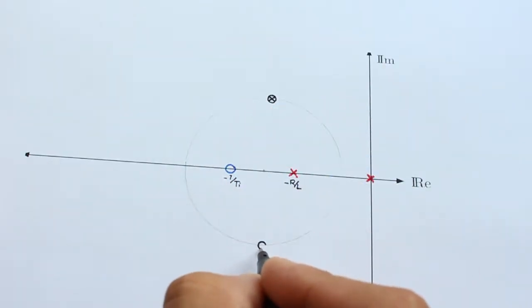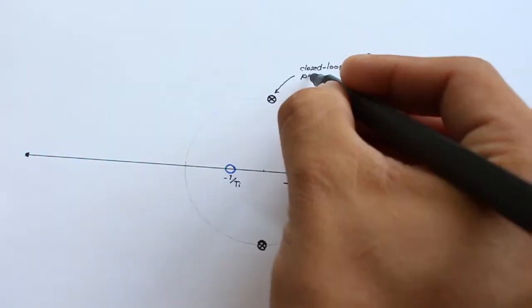This way, by modifying the kp constant, we can move the closed-loop poles along the root locus path.